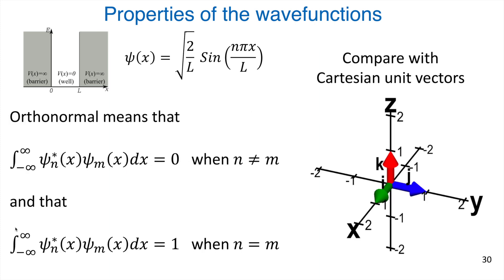This is a little bit similar to Cartesian unit vectors, which are also a basis. Our Cartesian unit vectors each have unit length one. If you take the dot product of any pair of them, you're going to get zero — so if you dot x-hat with y-hat, that's zero. But if you dot x-hat with itself, you get one. You can see how this is a similar principle.